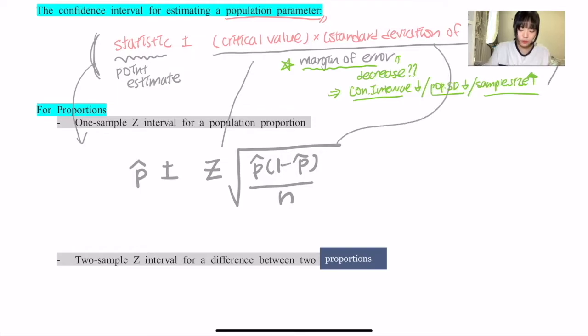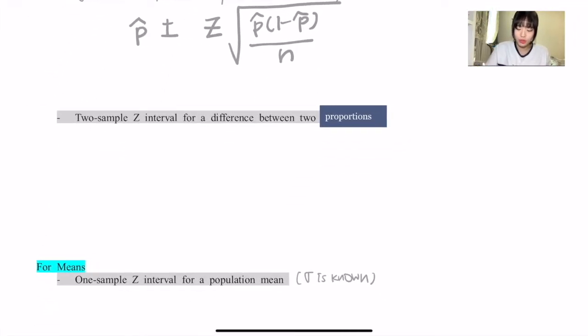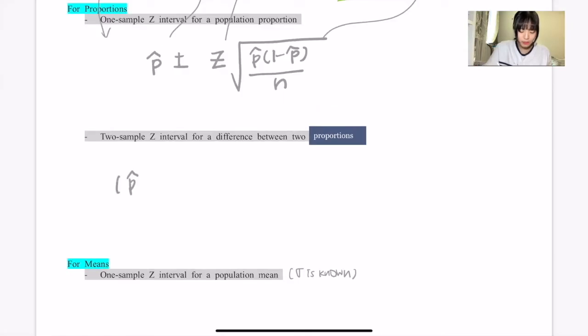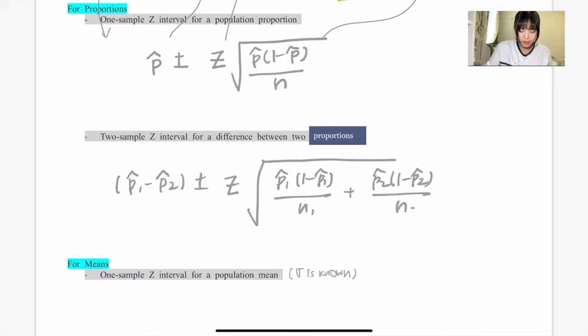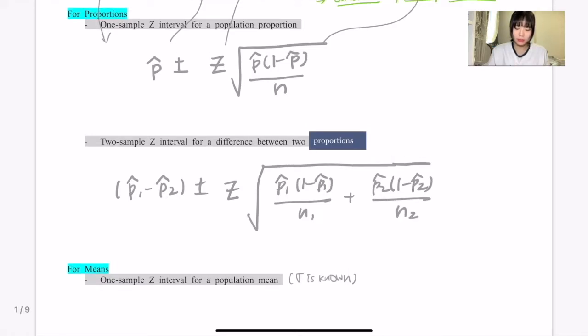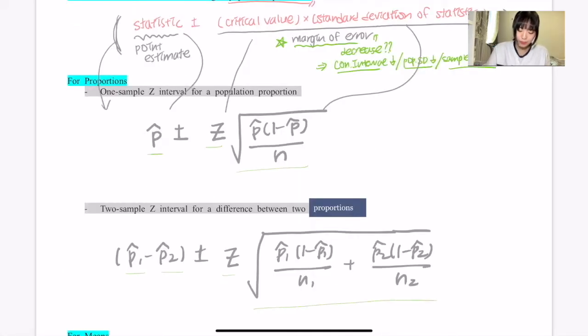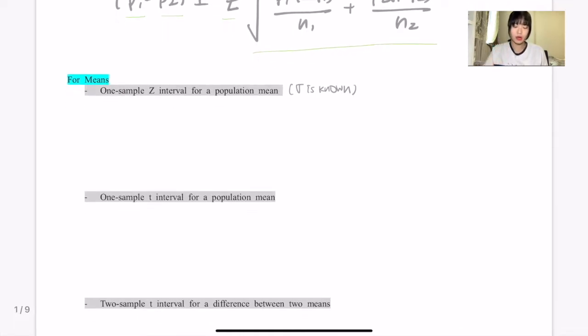For a two-sample Z interval for difference between two proportions: (p̂₁ - p̂₂) ± z√[p̂₁(1-p̂₁)/n₁ + p̂₂(1-p̂₂)/n₂]. You can see it's similar to the one-sample Z interval, except there are p̂₁ and p̂₂. It's easy to memorize because the overall formula looks very similar.